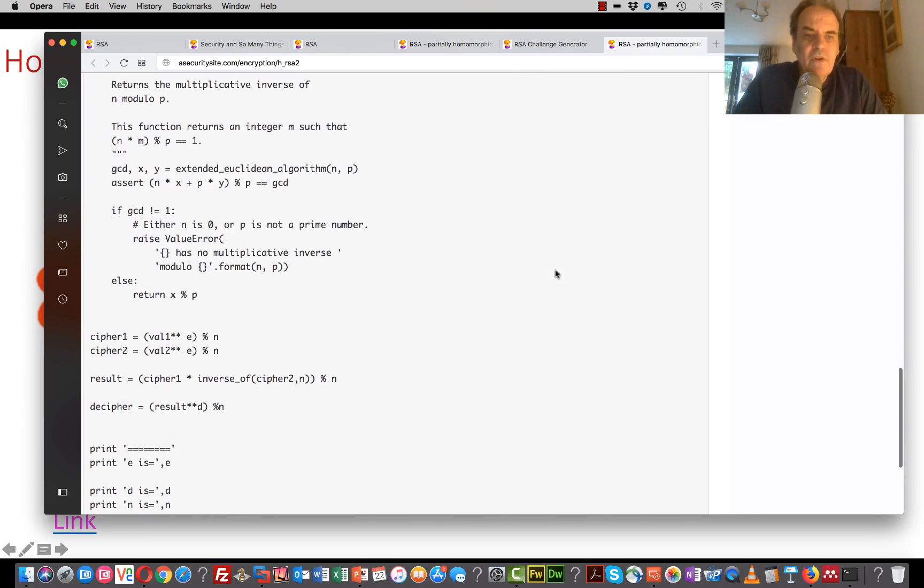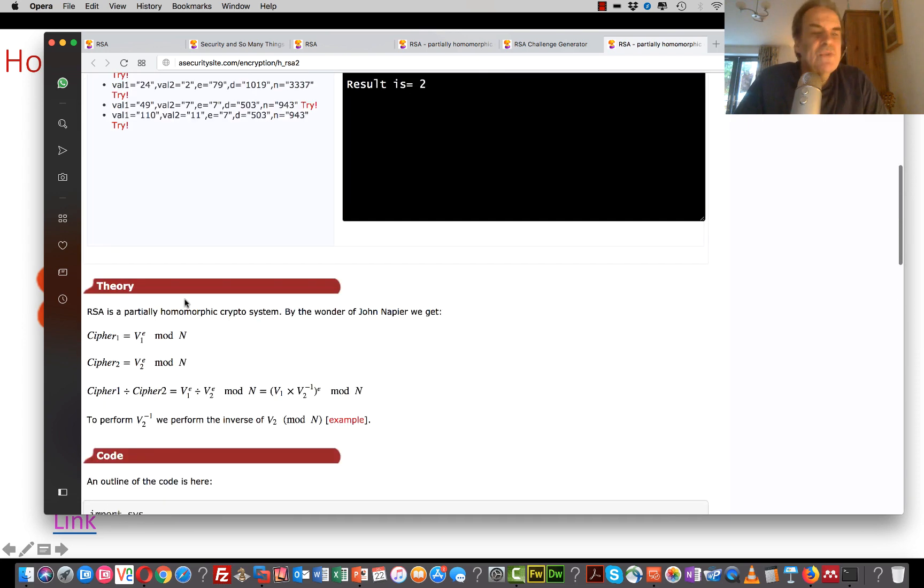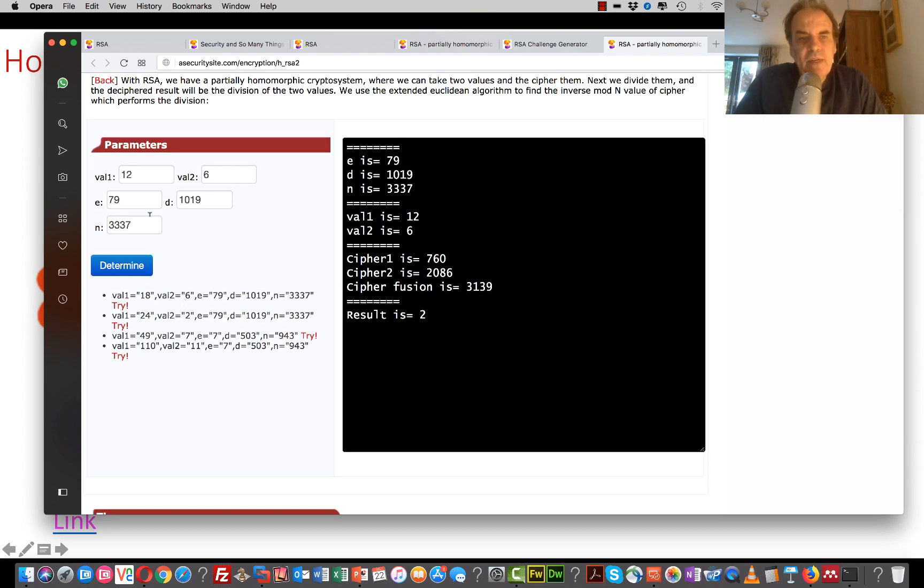Okay, so this time what I've got is some code. I'm going to cipher the values, and then rather than cipher 1 times cipher 2 mod N, I'll take cipher 1 times the inverse of cipher 2 mod N. Multiply them, and then take mod N again. And then I'll decipher it, and hopefully it will work. So it only does an integer division. So in this case it's 12 divided by 6 gives us a result of 2.